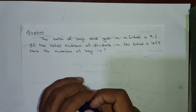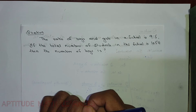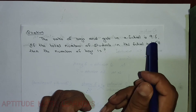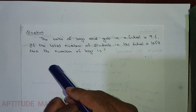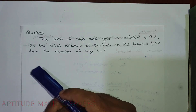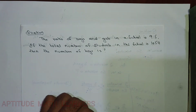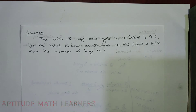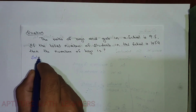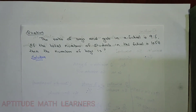Welcome. Our latest question is: the ratio of boys and girls in a school is 9:5. If the total number of students in the school is 1050, then find the number of boys. So we have to find the number of boys. Let's start with our solution.